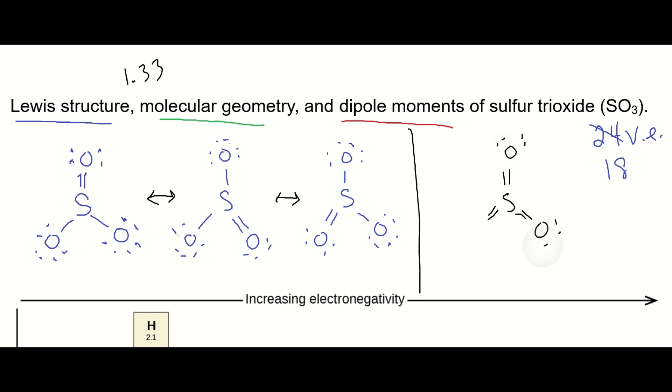which does appear to be more stable in terms of formal charge. Now, we observe the 1.33 bond average between each, so we're going to use the resonance structures on the left.